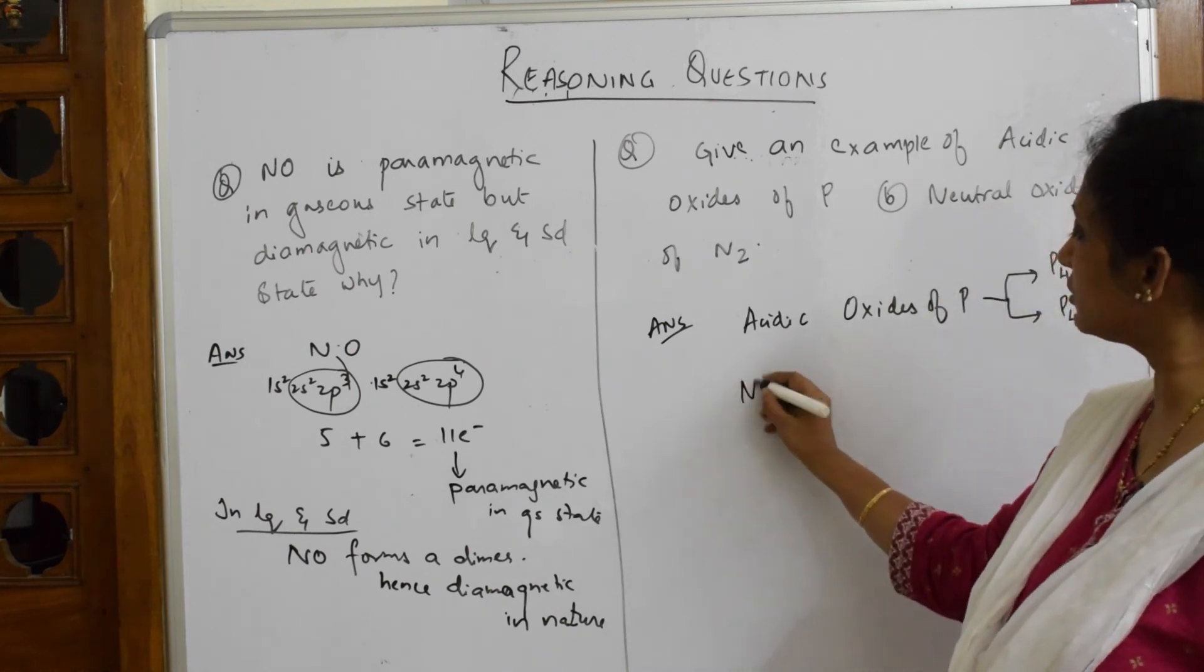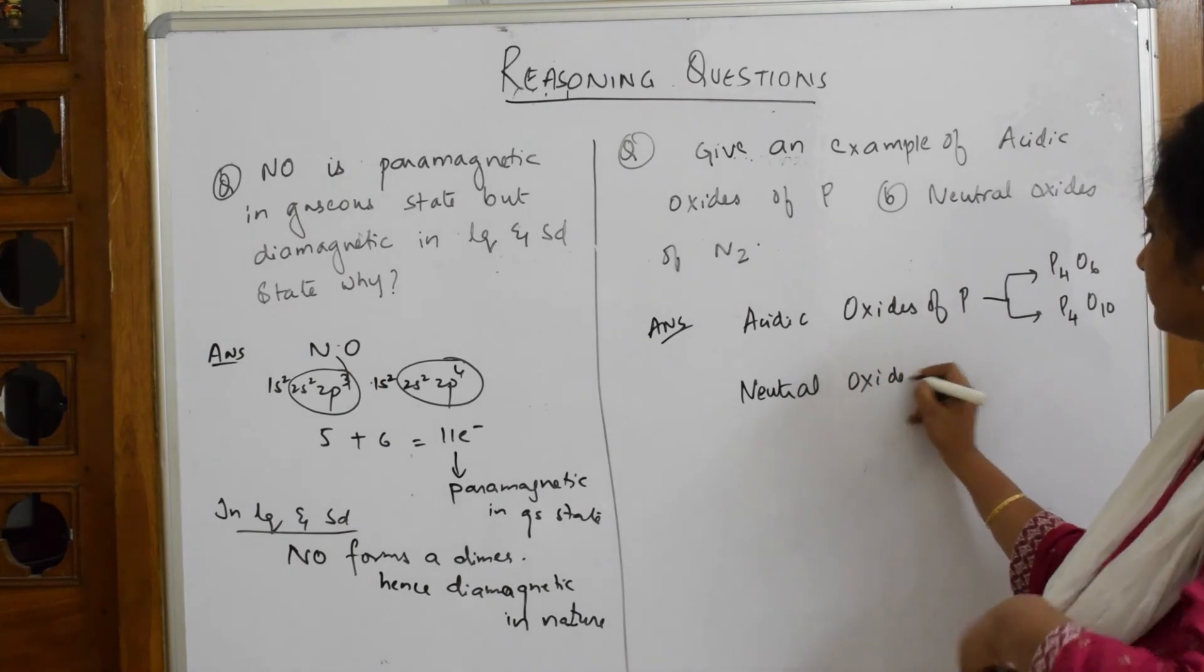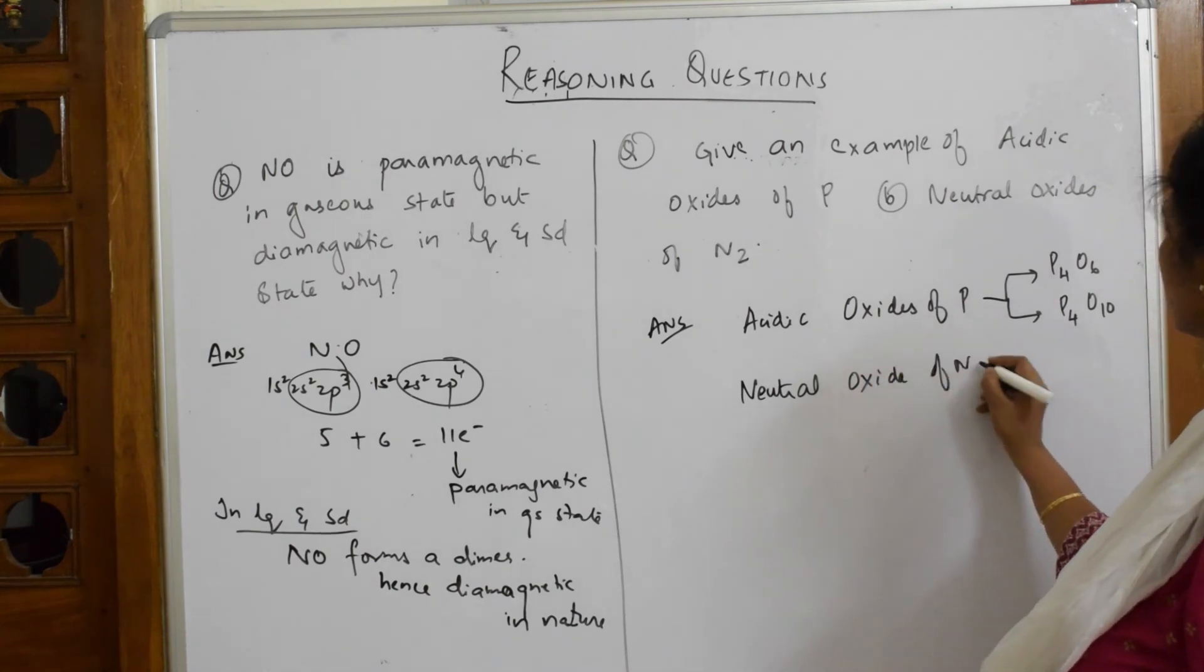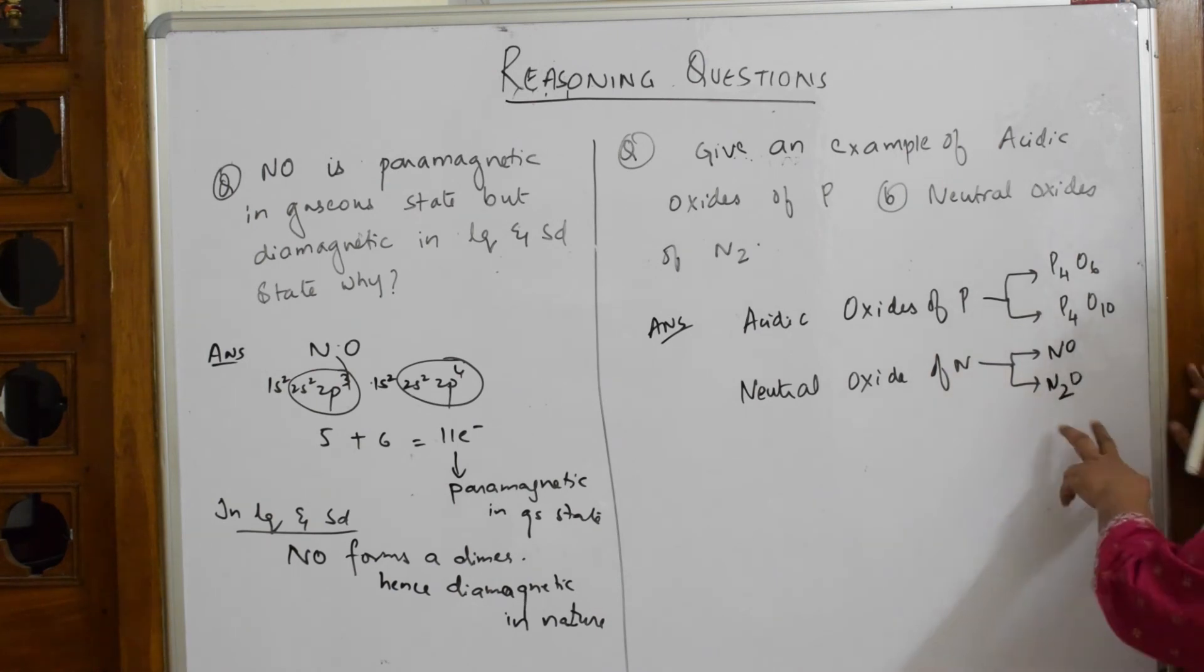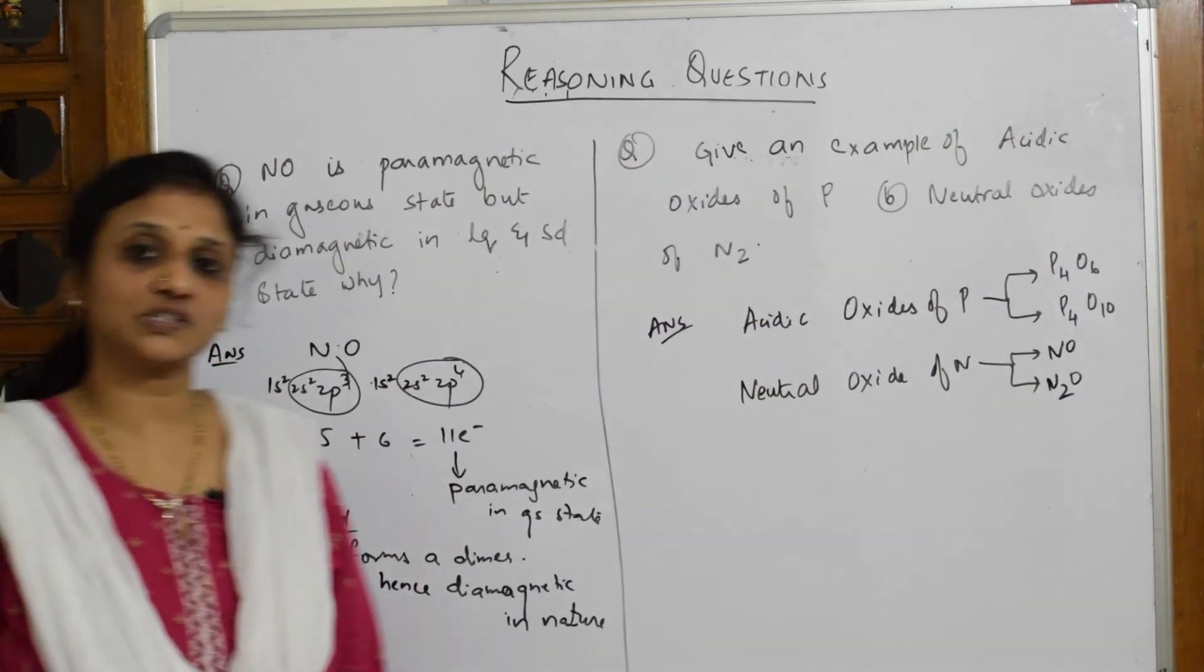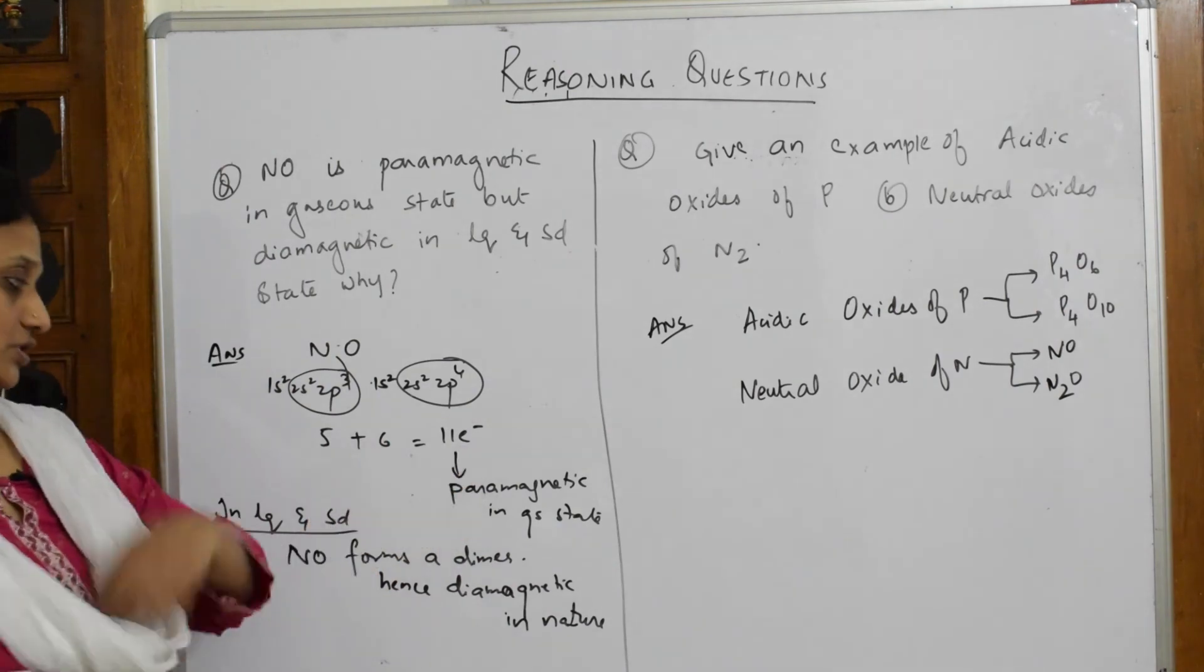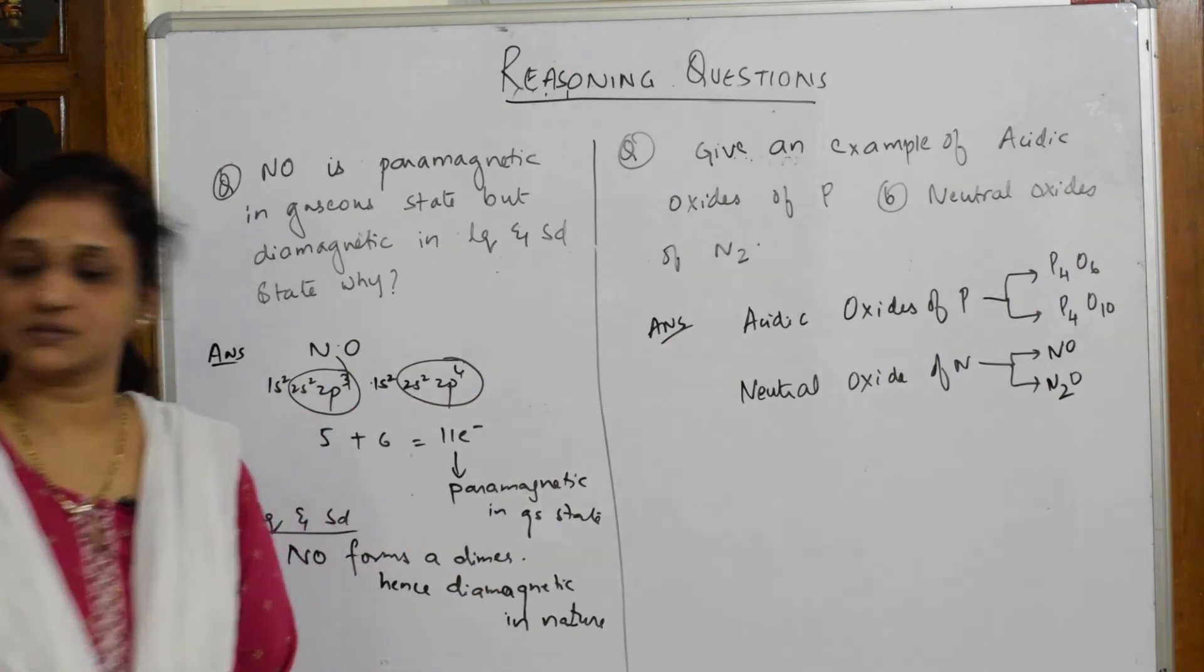And neutral oxides of nitrogen. There are again two which we have already done the structures. The first one is NO and N₂O. Both the laughing gas as well as NO—both are neutral oxides of nitrogen. Simple question. Please note this is the way you write these examples.